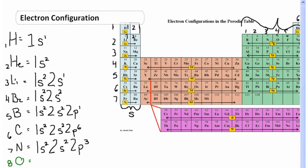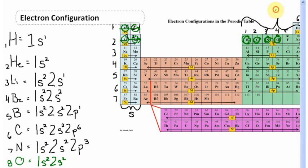Oxygen has eight protons and eight electrons. The first energy level holds two electrons in the s orbital — 1s2. On the second energy level, two electrons go in the s orbital — 2s2. That's four electrons placed; four more to go. They go into the p orbital: P1, P2, P3, P4 — that's 2p4. Oxygen's electron configuration is 1s2 2s2 2p4.